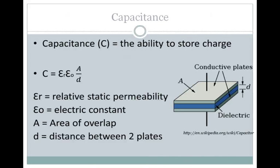Here we have a capacitor that you might have seen in your physics class. A capacitor can keep positive and negative charges apart. The capacitor is made of two conductive plates with a dielectric or insulating material in between.